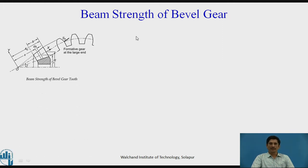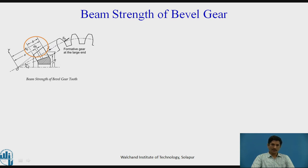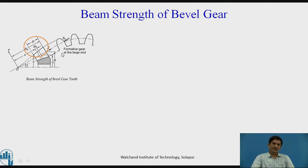Let us see what is the beam strength of a bevel gear. If we consider this beveled tooth, the circle represents A-naught which is the cone distance, b is the face width, dx is the elemental zone considered to derive the beam strength of a bevel gear. Gamma is the pitch angle, rx is the radius at the elemental section, and capital R is the radius at the larger end of the tooth. We have seen that we have to consider the larger end of the tooth to derive the beam strength of a bevel gear.